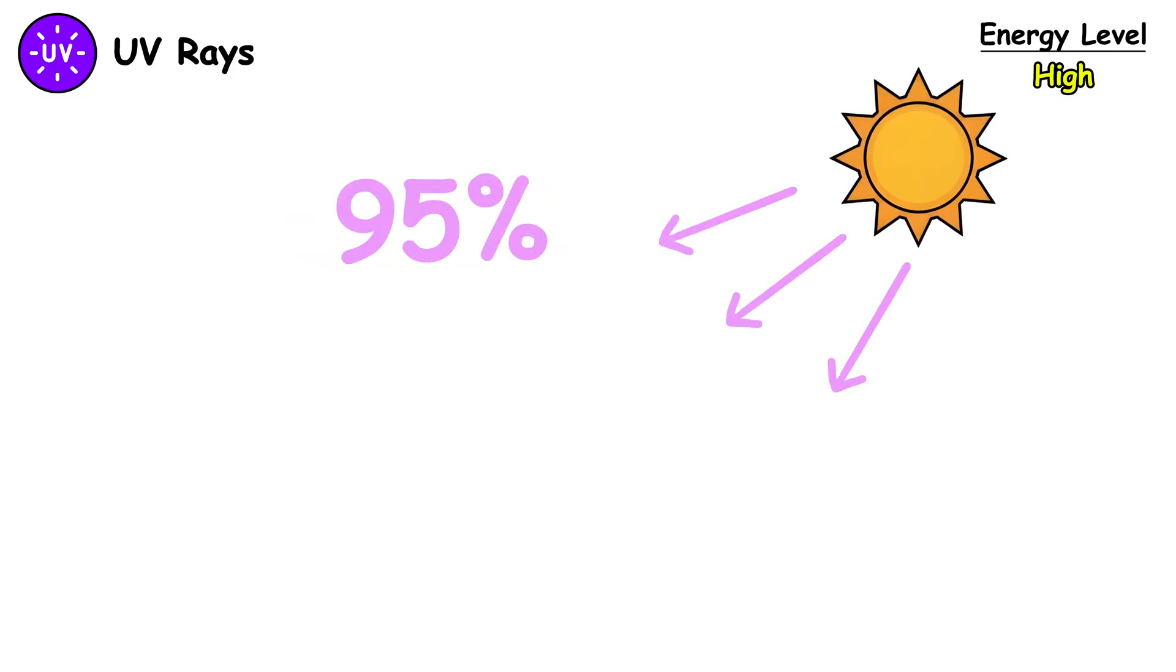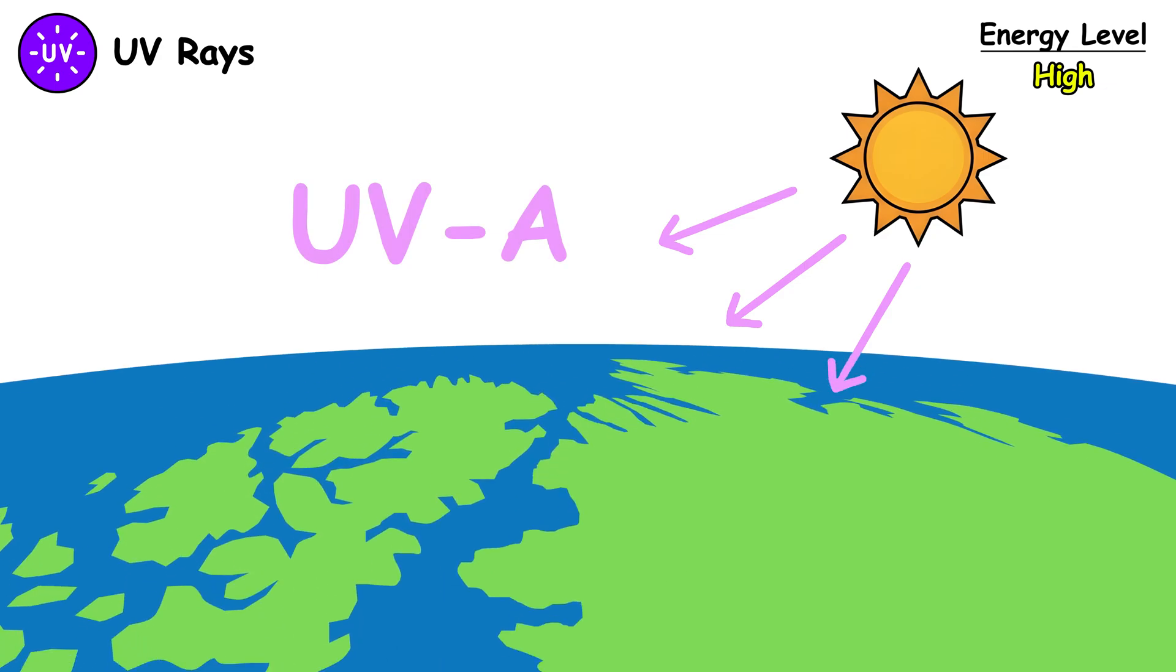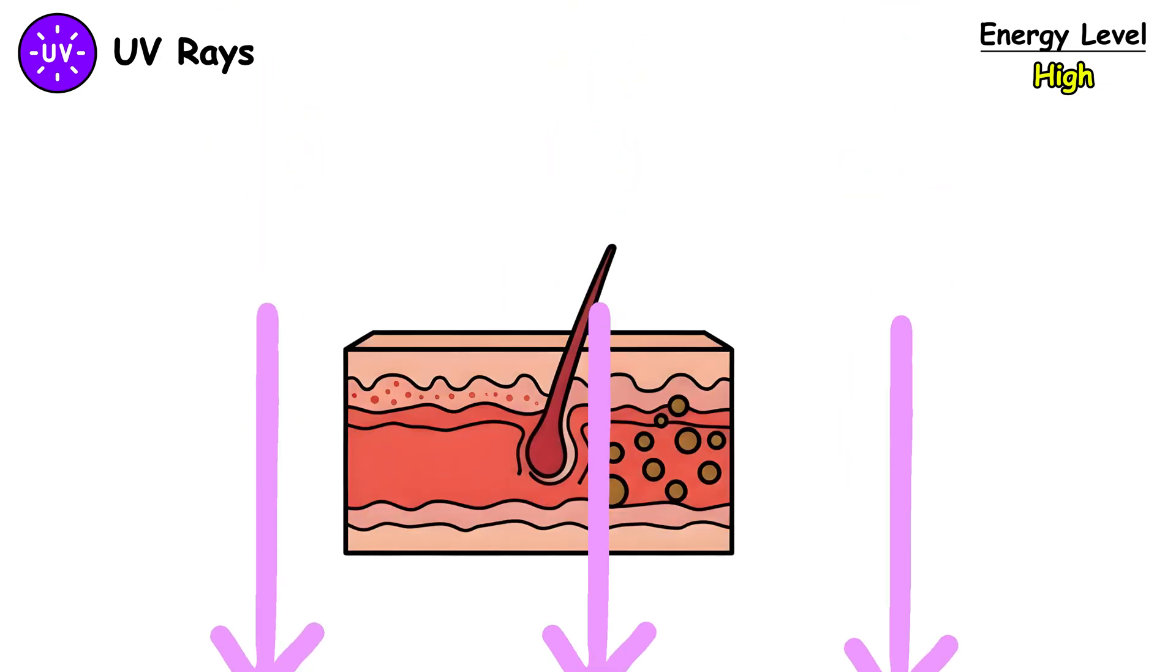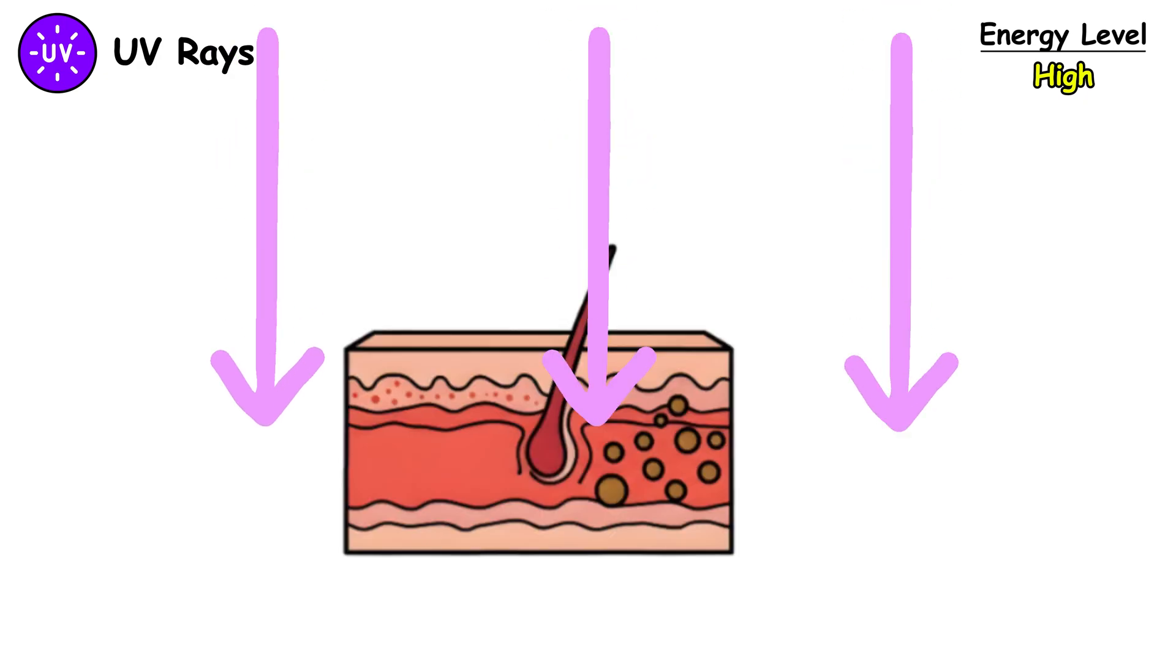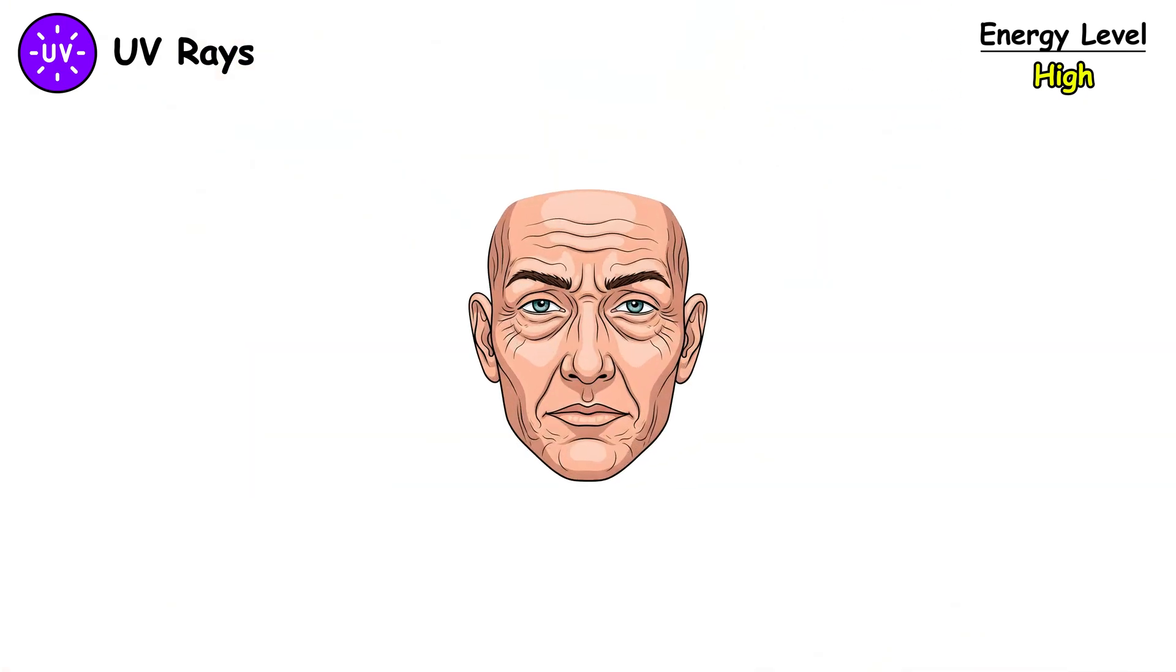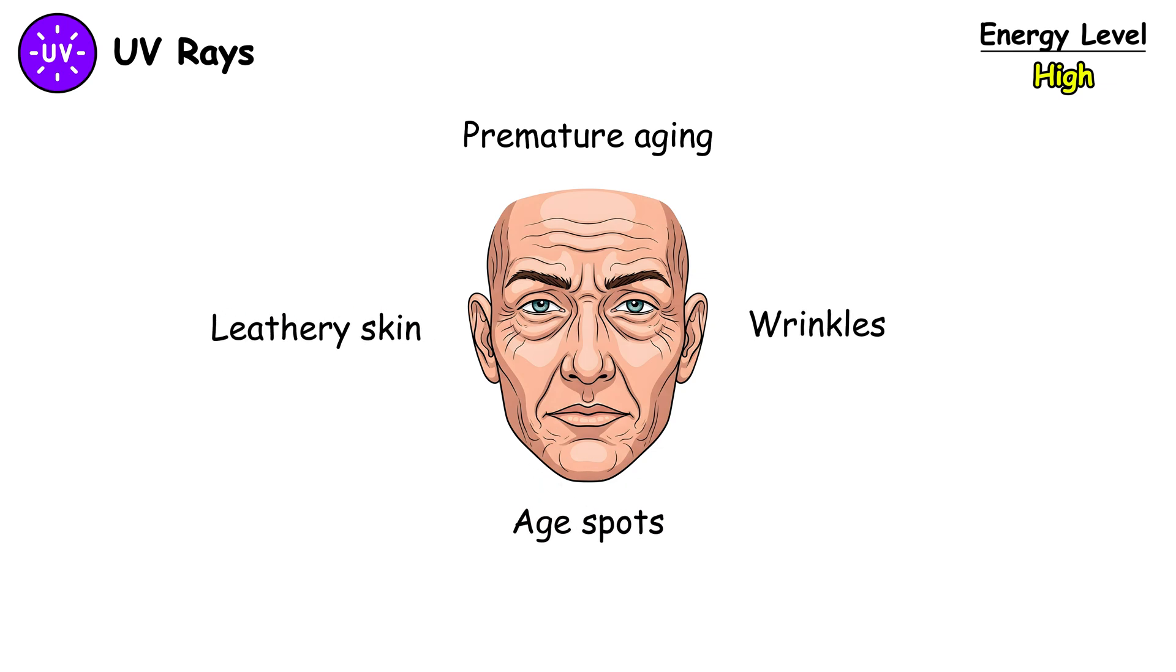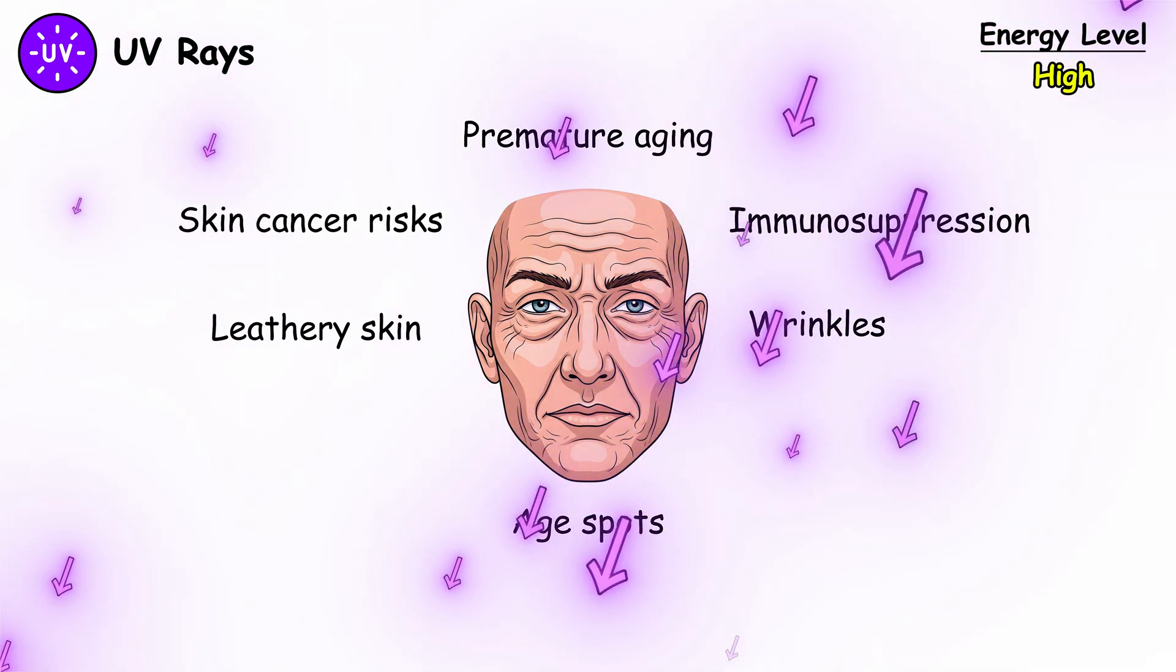UVA makes up about 95% of UV radiation reaching Earth's surface. These rays penetrate deep into your skin, damaging collagen and elastin fibers. This causes premature aging, wrinkles, age spots, and leathery skin texture. It also suppresses immune function and contributes to skin cancer development over decades of exposure.